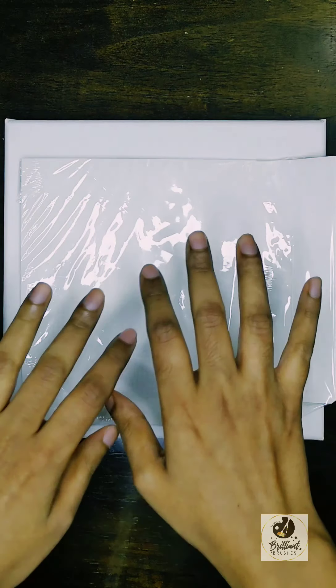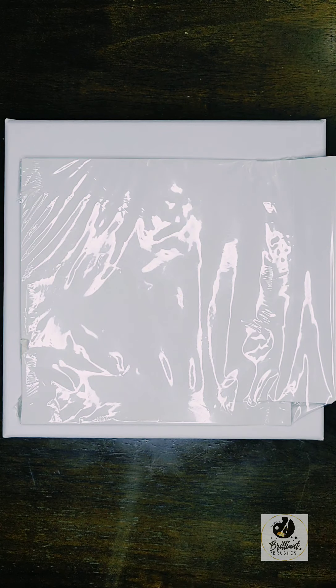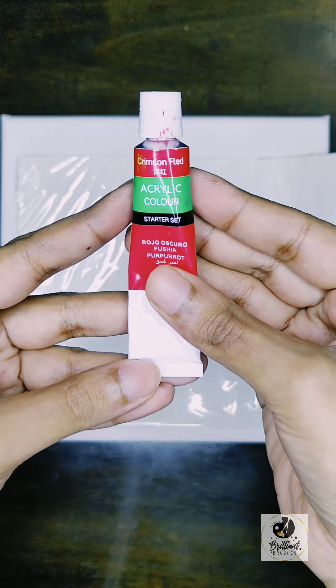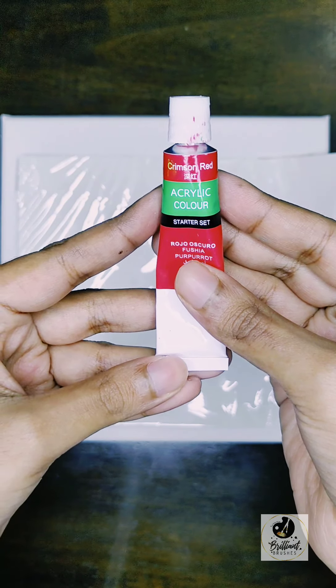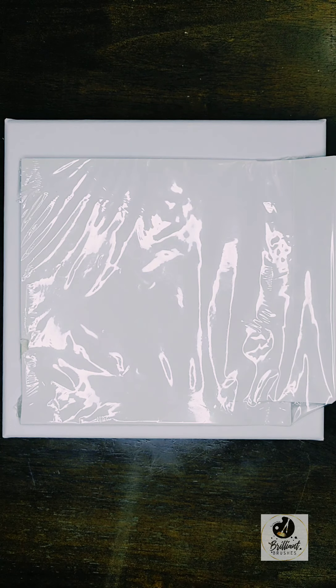So let's start off. First we'll be taking the crimson red. I'm laying down the palette and taking crimson red as you can see here, and putting this into the palette.